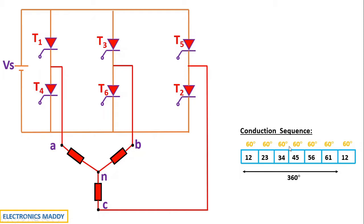Every 60 degrees the triggering pattern changes. If you carefully observe, thyristor 2 appears here and here — 60 plus 60 gives you 120 degrees. That is why the mode of operation is called 120 degree mode, because each switch conducts for 120 degrees. Similarly, thyristors 3, 4, and 5 each conduct for 120 degrees.